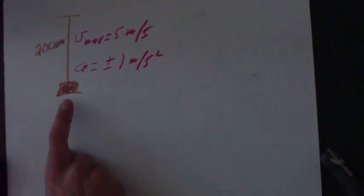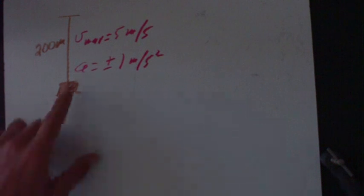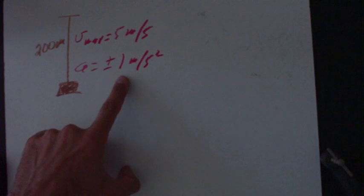This is a problem about an elevator that sits at the bottom floor, and it has a 200-meter path to travel all the way up to the top. Some of the parameters that we were given is that the elevator can reach a maximum speed of five meters per second, and when it's speeding up, it has an acceleration of one meter per second squared.